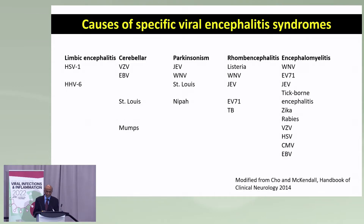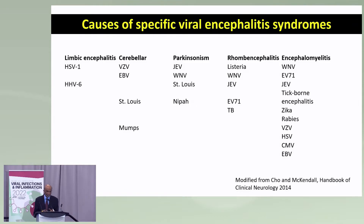It's not simple, but there are some clues. Patients with limbic encephalitis are most often caused by herpes viruses one and six — six most often in immunosuppressed individuals. Cerebellar syndromes can be associated with varicella zoster virus, often occurring as a sequelae after chickenpox: a child presents with cerebellar syndromes a few weeks later, it's transient, lasting days or weeks, and probably an immune-mediated phenomenon. Epstein-Barr virus can do the same thing.